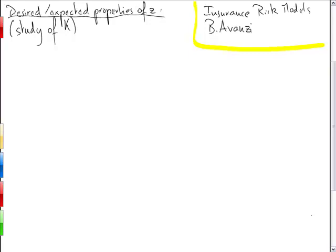This recording is related to week 10's lecture of the course Insurance Risk Models. In this recording I'm discussing desired or expected properties of the credibility factor Z, and related to that is the study of the factor K in Buhlmann model. So Z is an indicator of the credibility of individual experience.